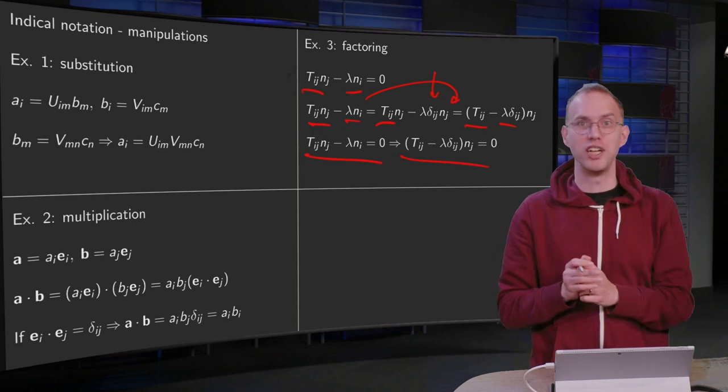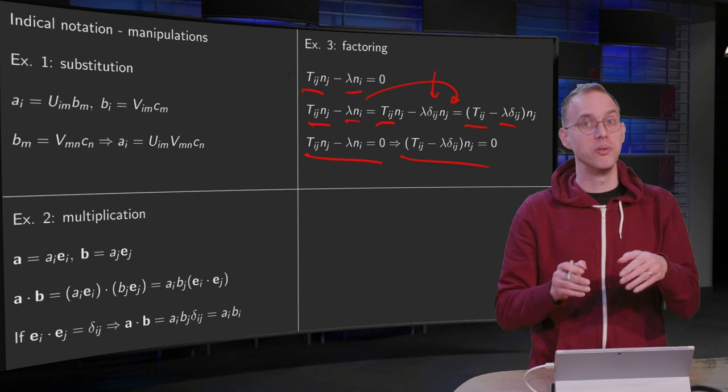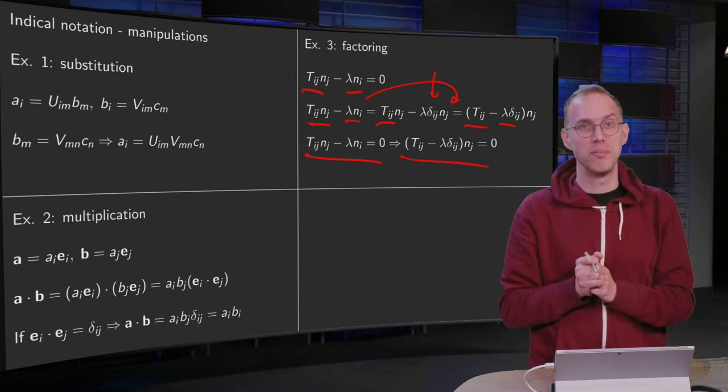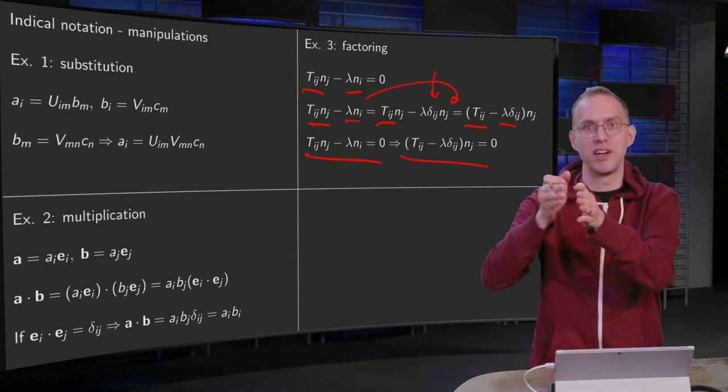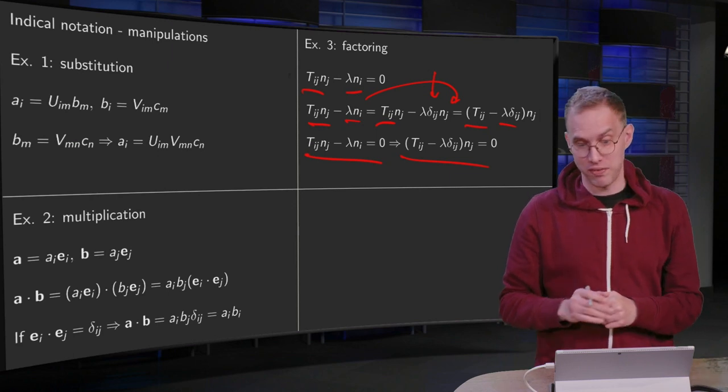Because what do we have here? This T_ij will be some matrix, lambda will be some eigenvalue. So what you actually are doing is that you include an additional identity matrix to write something like A times lambda times eigenvector equals zero vector. So that's why you use this factoring.